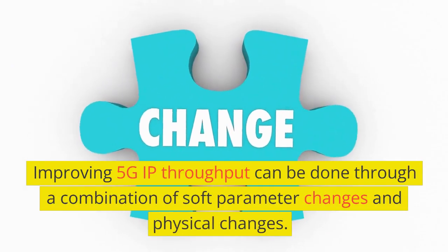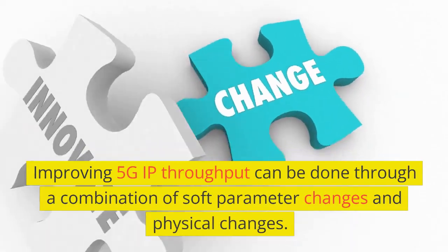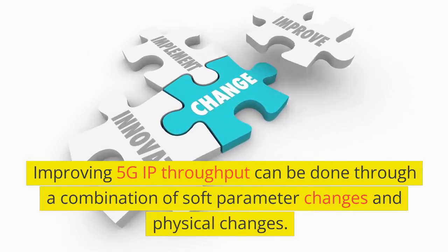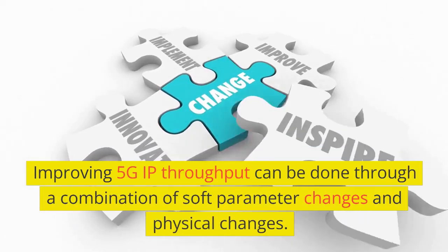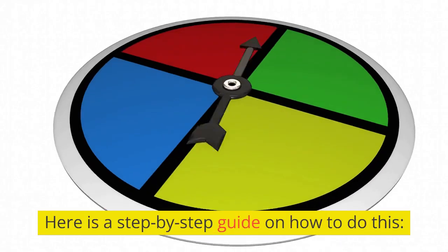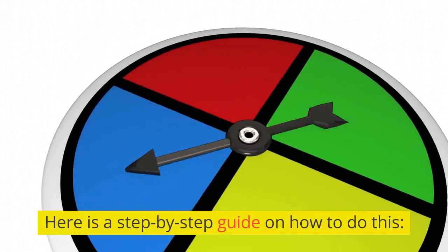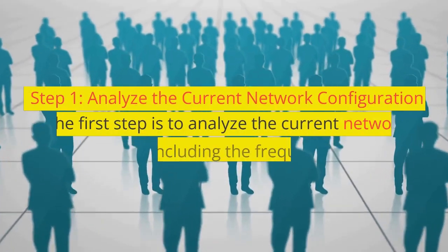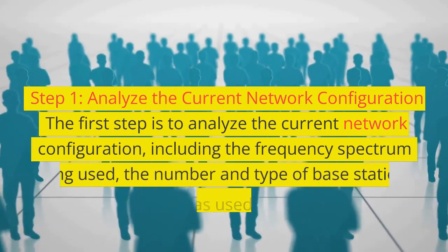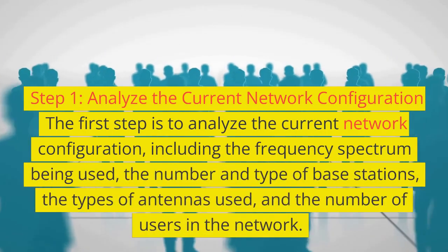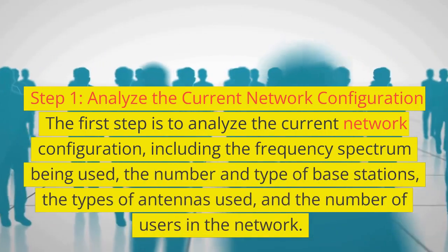Improving 5G IP throughput can be done through a combination of soft parameter changes and physical changes. Here is a step-by-step guide on how to do this. Step 1: Analyze the current network configuration. The first step is to analyze the current network configuration,